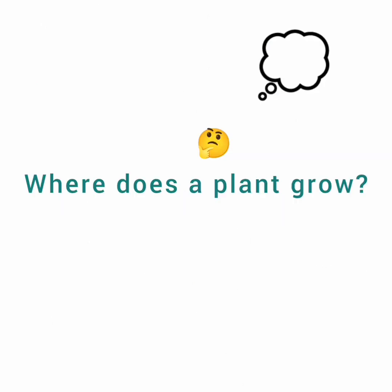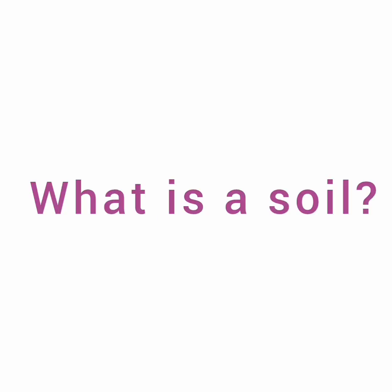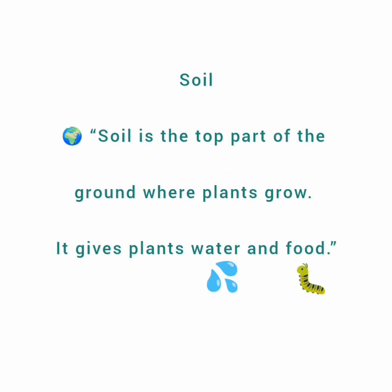Where does a plant grow? Plants grow on the soil. What is soil? Soil is the top part of the ground where plants grow. It gives plants water and food.